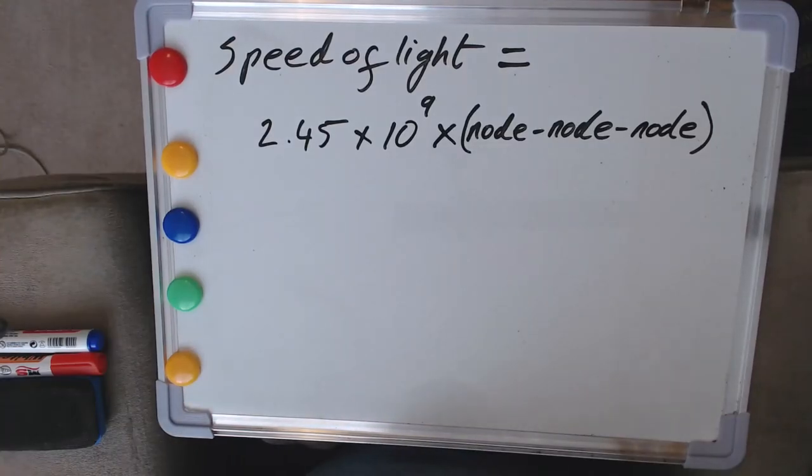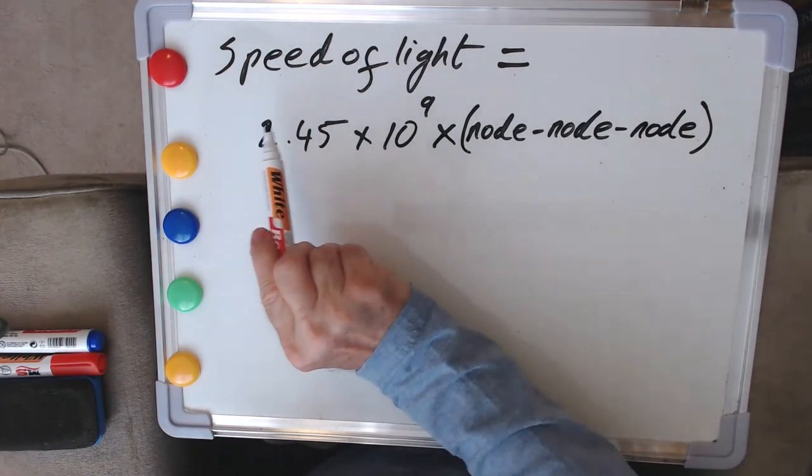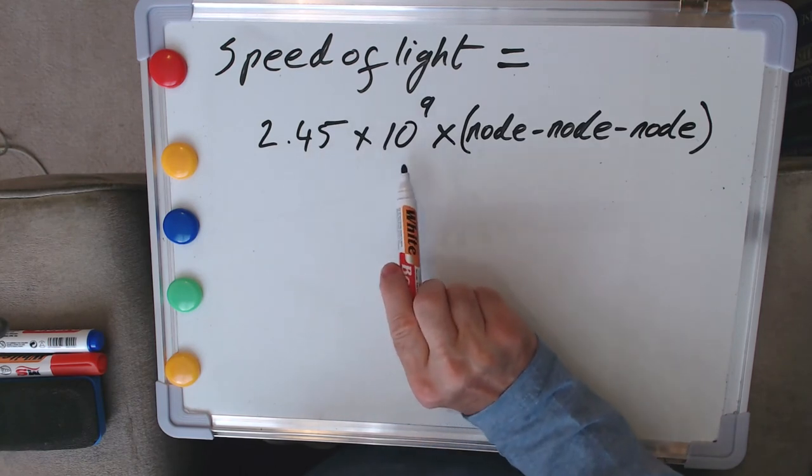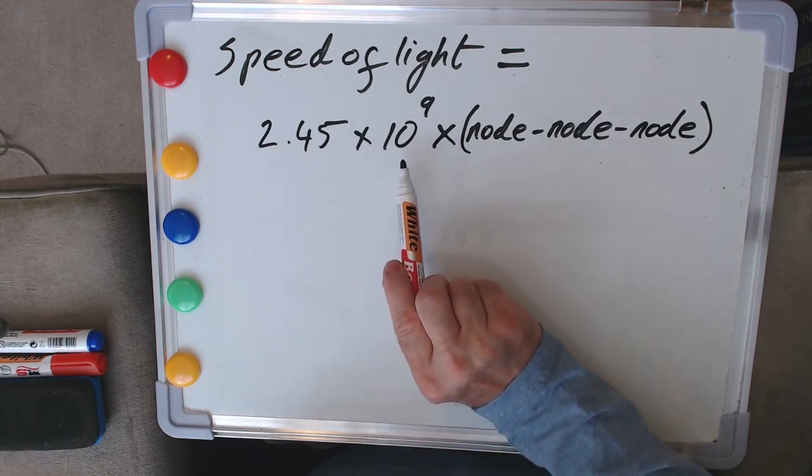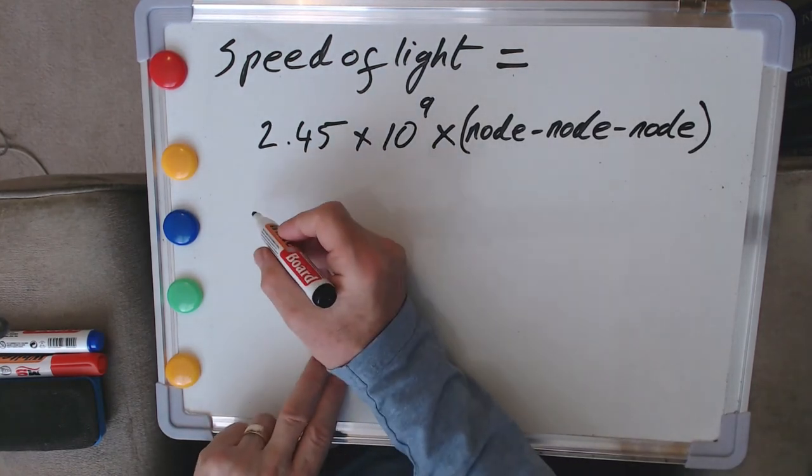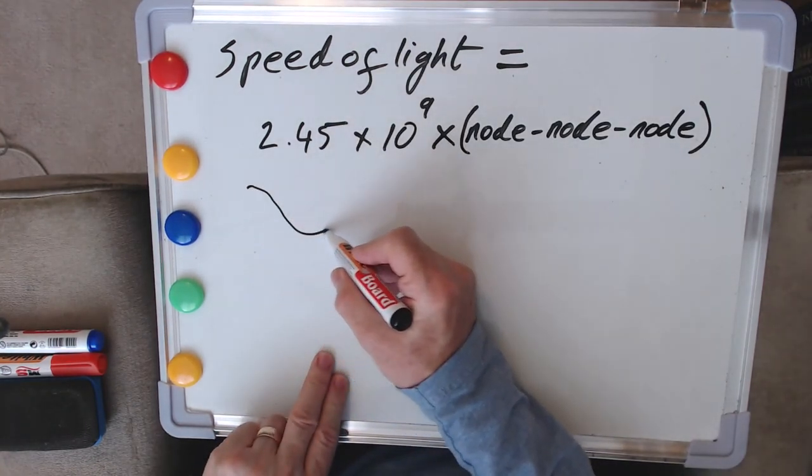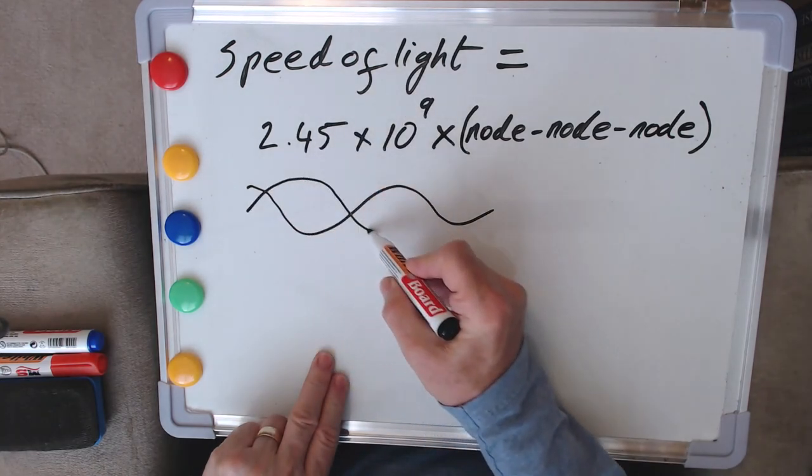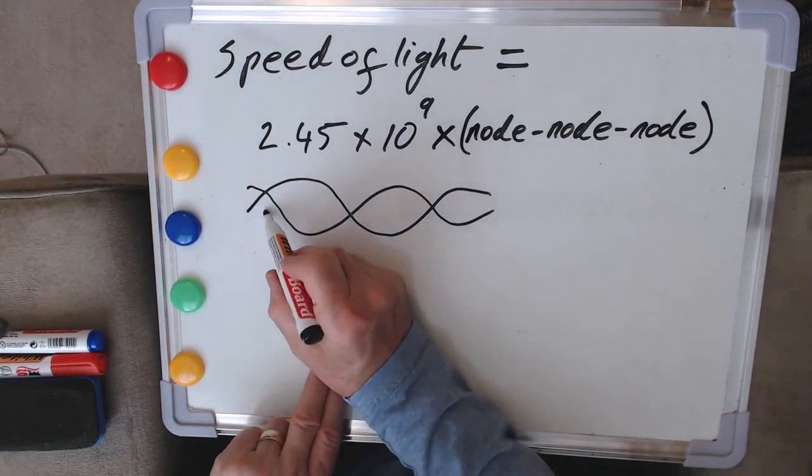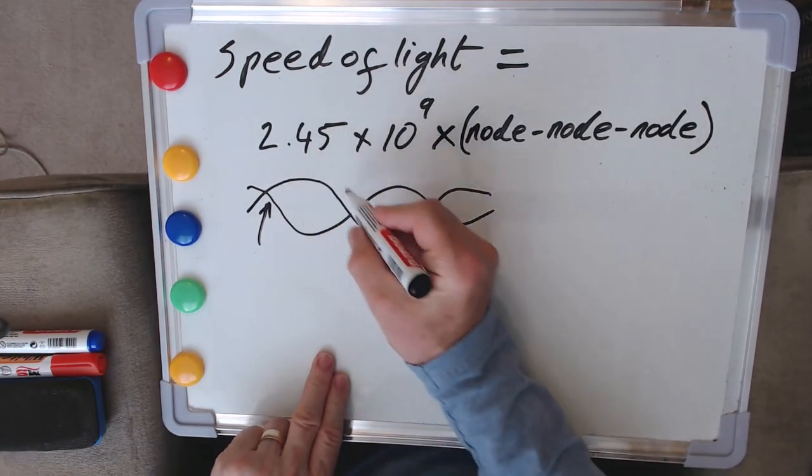Okay we're back from our experiment now, our measurement, and we've got our master equation again remember. So the speed of light is its frequency, 2.45 times 10 to the 9 in the case of our microwave oven, multiplied by the wavelength that we measure inside. And the wavelength, so let's sketch this out again, we have this standing wave pattern remember.